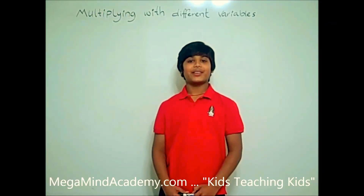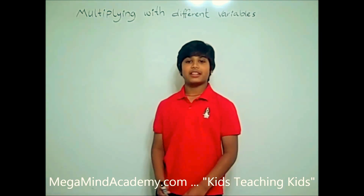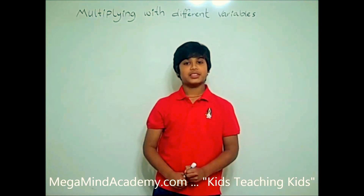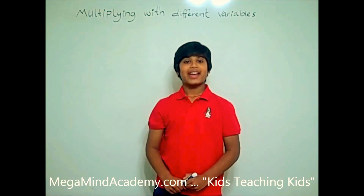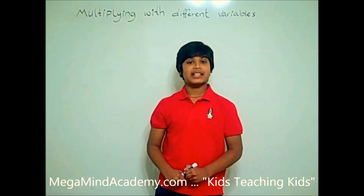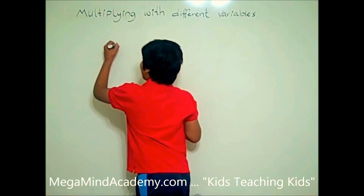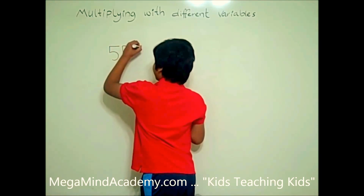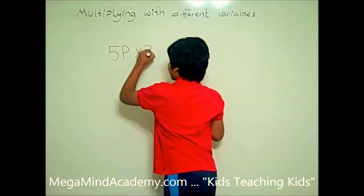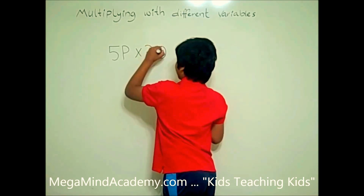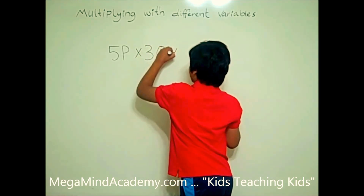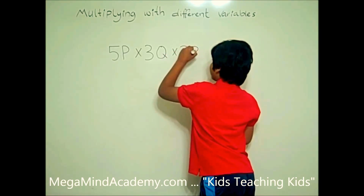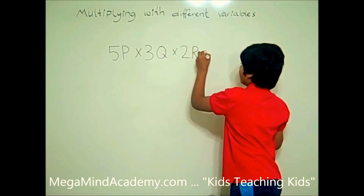Hello! Today we're going to learn about how to multiply with different variables. Let's imagine that we have the variables p, q, and r. Let's say we have an example like 5p times 3q times 2r is equal to what?